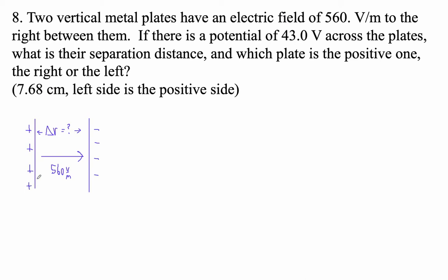Because what would positive charge do? Positive charge would go away from the positive toward the negative. So if the electric field's to the right, we know that this side is the positive, this is the negative. So left side is the positive side - that's easy peasy.